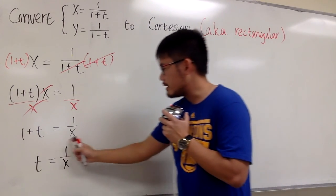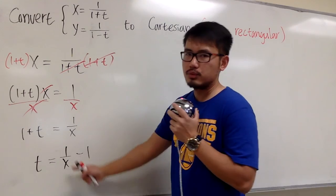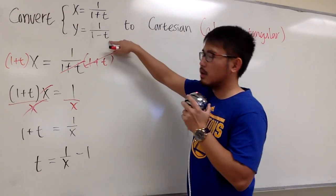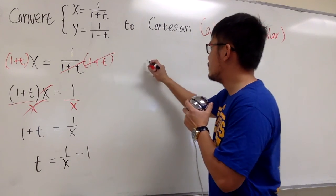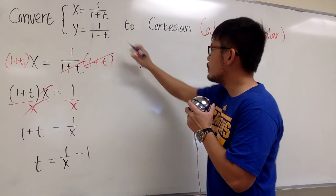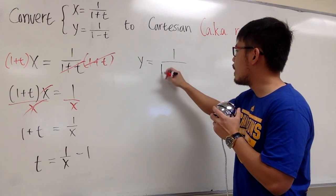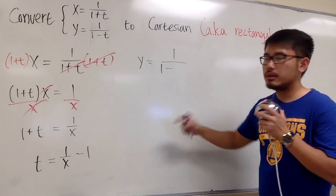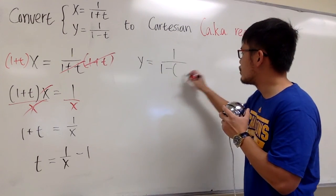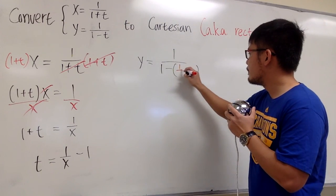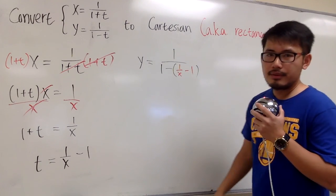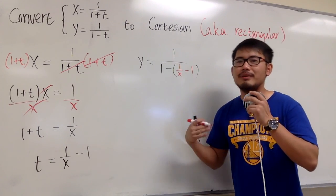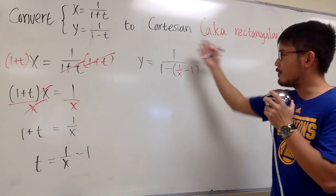We will plug in this, 1 over x minus 1, into the t right here of the y. Let me put down y, which is equal to 1 over 1 minus. All these are from the original y-expression, but for this t, we open the parentheses and then put in 1 over x minus 1. The rest is just we have to do more algebra to simplify this fraction.